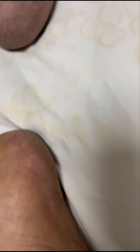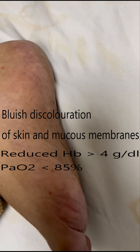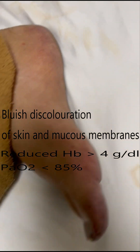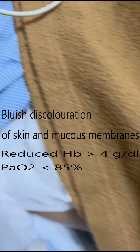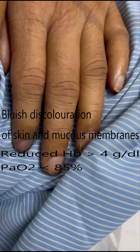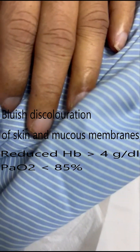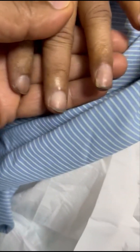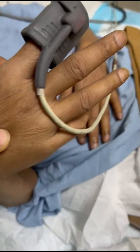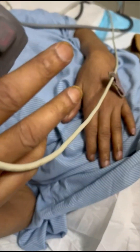So what is cyanosis? Cyanosis is the bluish discoloration of skin and mucous membrane due to increased quantity of reduced hemoglobin — more than 4 grams per deciliter — or when it increases to more than 30 percent of the total hemoglobin, or if the arterial oxygen saturation goes below 85 percent.